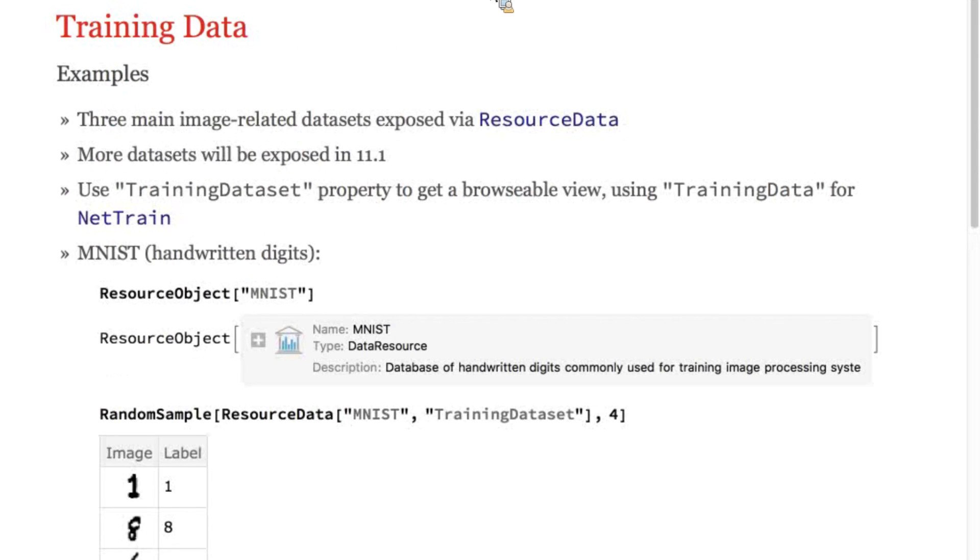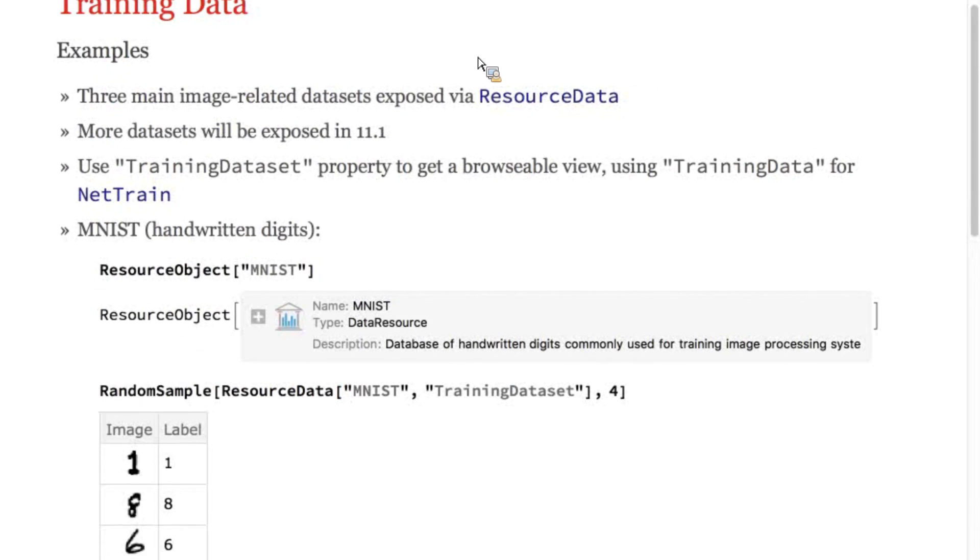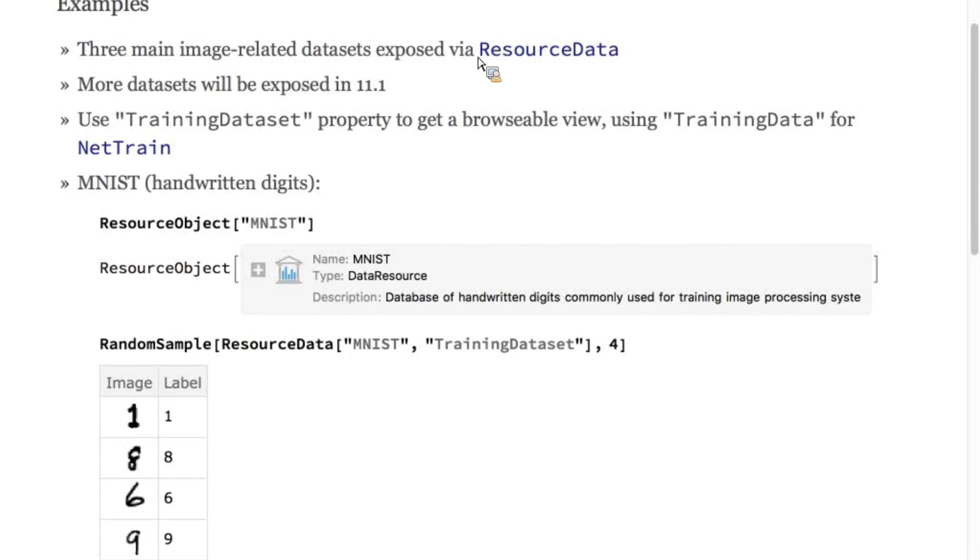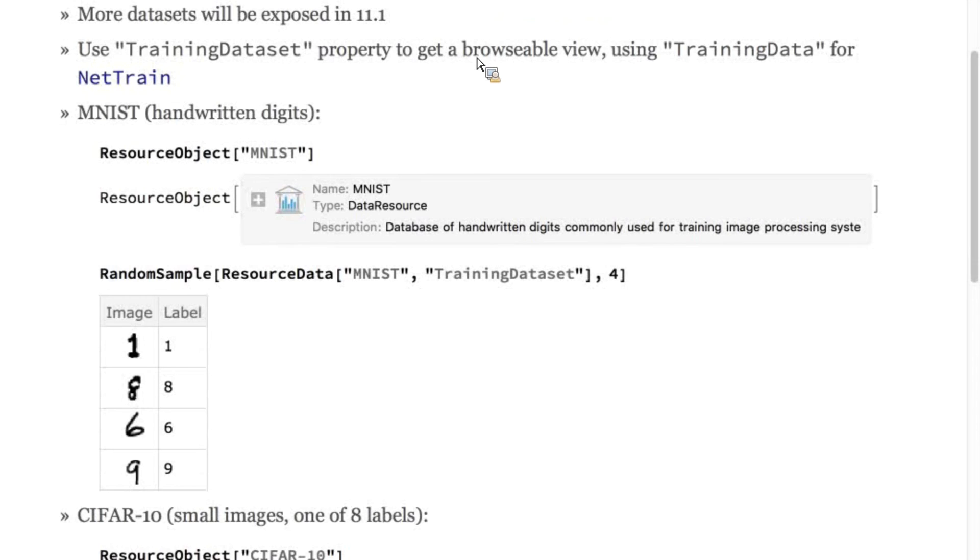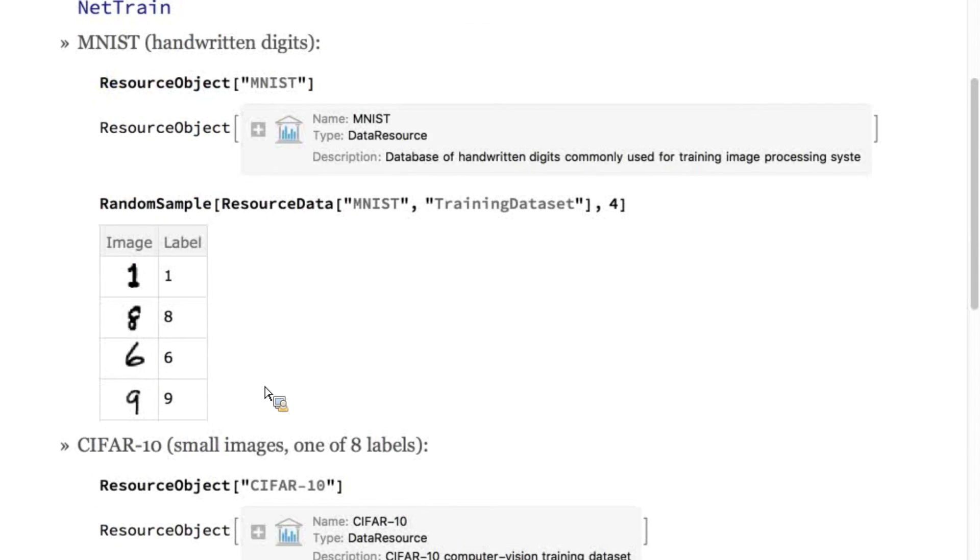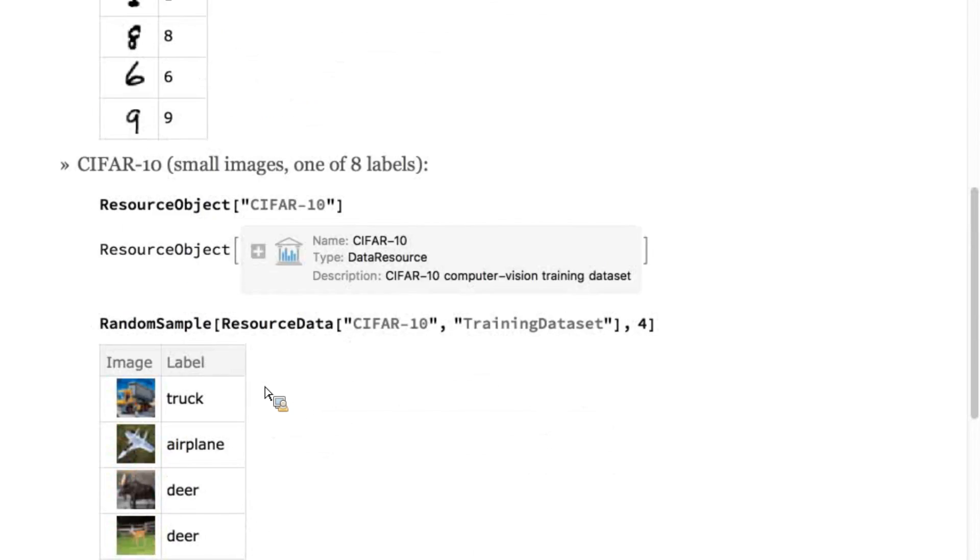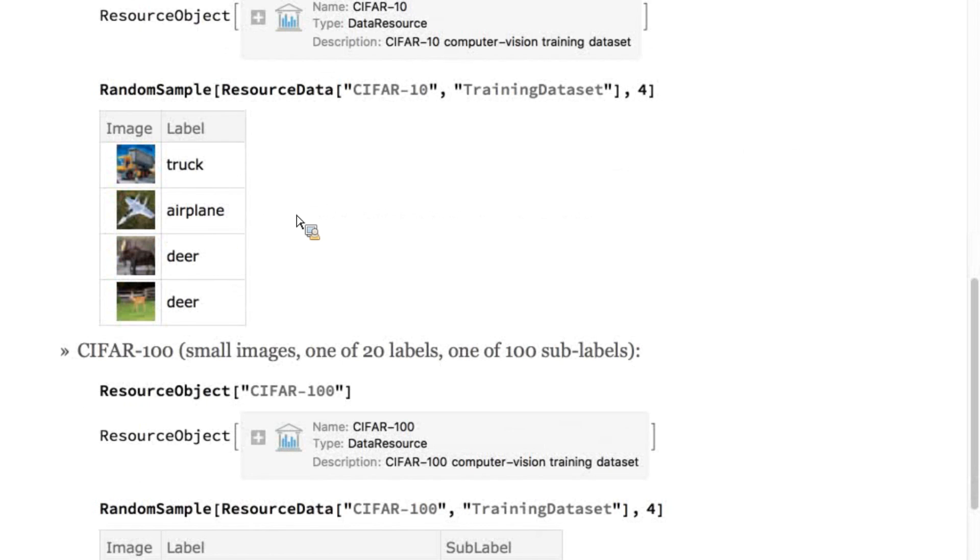With Mathematica 11, we provide a few well-known datasets to experiment with. You can get access to these using the function resource data, which is also new in 11. The first that I'm showing here is MNIST, a database of handwritten digits. The most common task is to predict the digit just given the image. The second is CIFAR10, a set of small images showing objects in one of 10 categories. Here are just four sampled at random.